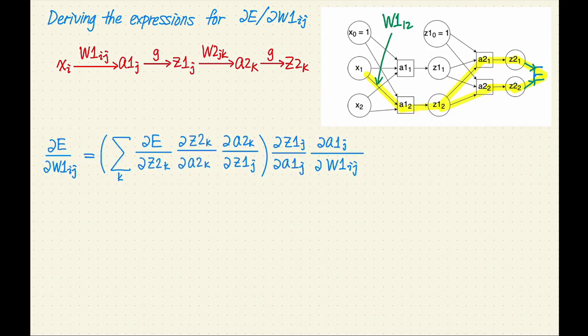Let's derive our expression now. To apply the chain rule, we'll look at the highlighted path and go from right to left. We'll start with a summation over k, since we need to consider two paths, one for each output unit z2 sub k. E is a function of both z2 values, so the first term is partial E over partial z2 sub k.